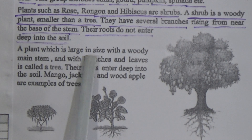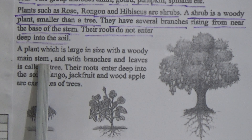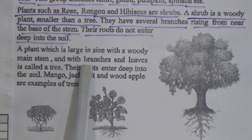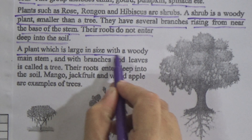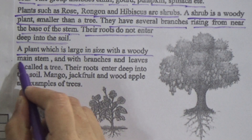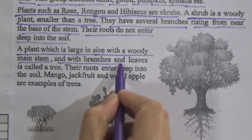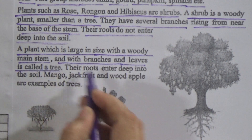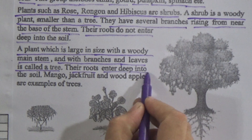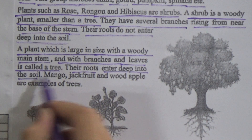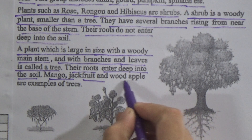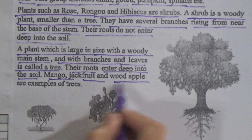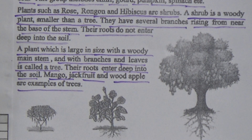A plant which is large in size with a woody main stem, with branches and leaves, is called a tree. Their roots enter deep into the soil. Examples of trees are mango, jackfruit and wood apple.